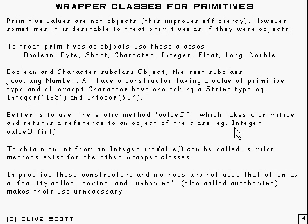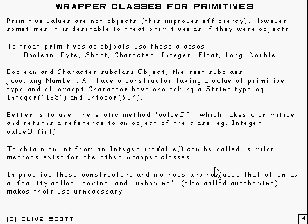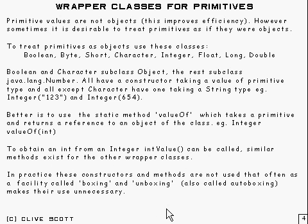So you've got a method like this — for Integer, it returns an Integer and it takes an int. You can also go the other way. There are also methods to go the other way in all these classes. So there is also something called intValue on Integer, for instance, which goes in the other direction — it returns the int value that's been wrapped in the class. Now, in practice, these constructors and methods aren't actually used that often these days, because there's a facility — not that new — called boxing and unboxing, also known as auto-boxing, which makes all their use unnecessary, and that's what I'm going to come to next.